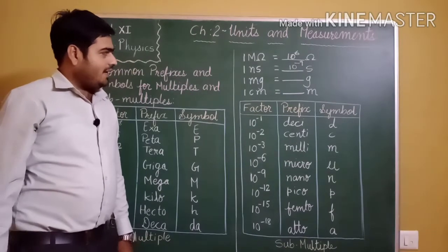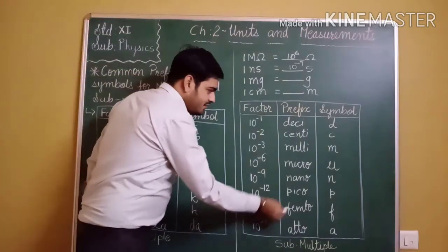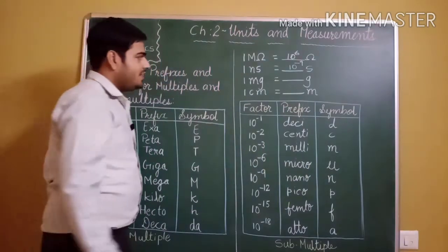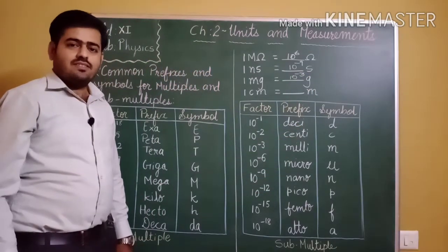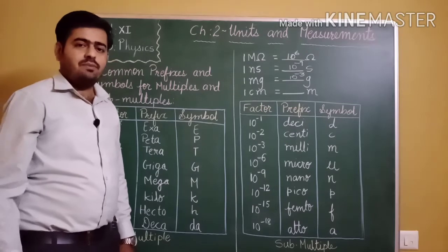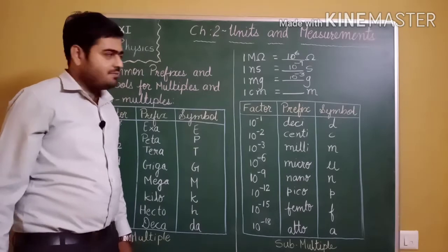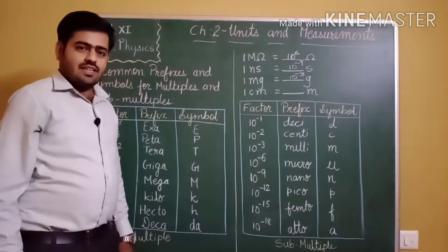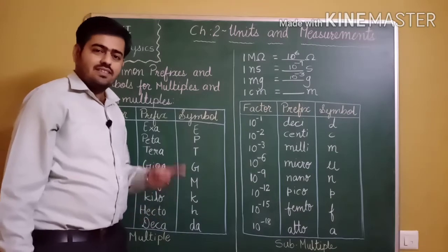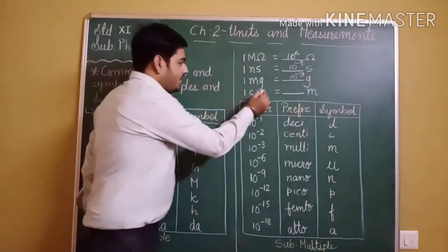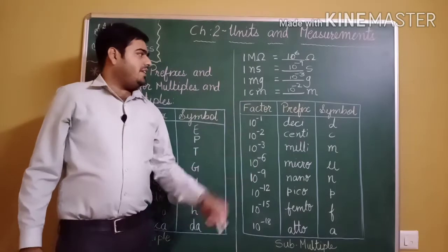Example 3: 1 milligram. Milli is in the submultiples table — milli means 10 to the power minus 3. So 1 milligram equals 10 to the power minus 3 gram. Similarly, 1 millimeter equals 10 to the power minus 3 meter. And 1 centimeter: centi means 10 to the power minus 2, so 1 centimeter equals 10 to the power minus 2 meter.